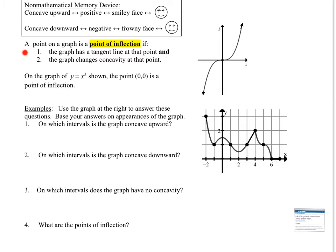A point on the graph is a point of inflection if the graph has a tangent line at that point and the graph changes concavity at that point. This piece right here is concave down — it's only half of a smiley face, but that still is concave down. Then at this point right here, I'm going to switch to concave up, and when that happens, we have a point of inflection. On the graph of y equals x cubed, the point (0, 0) is the point of inflection.